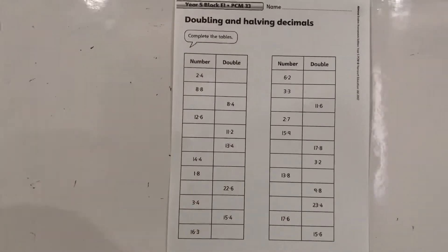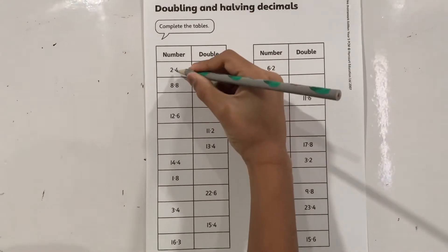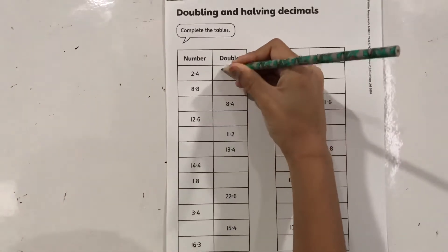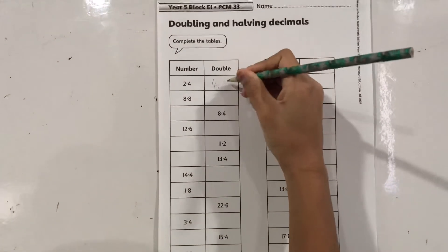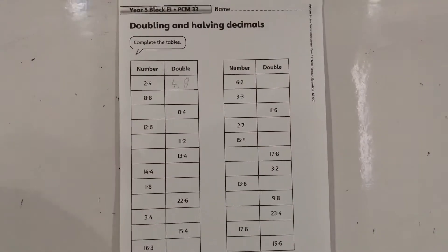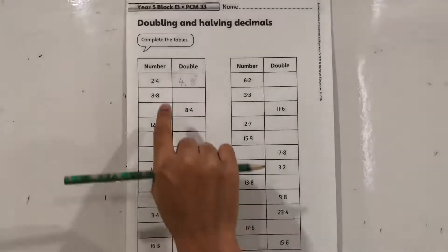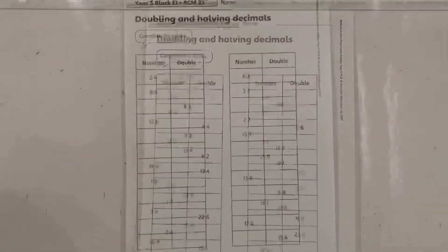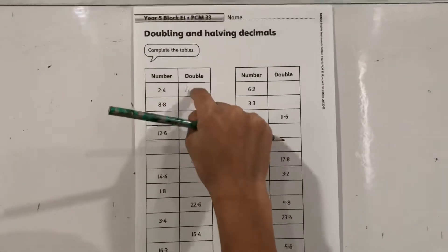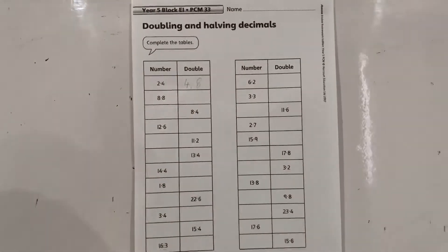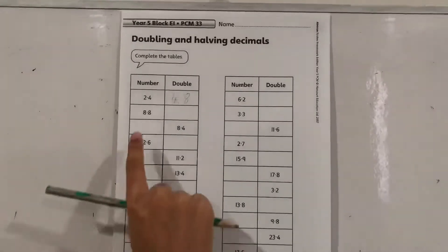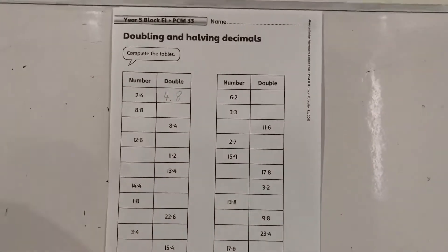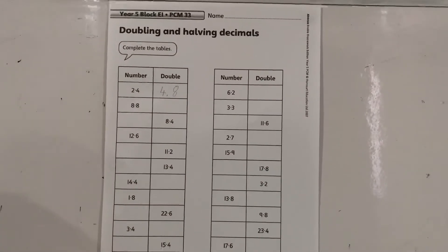We need to find the double of this number. Do you know 4.8? It is the same as doubling whole numbers, which means we double 24, but this is just a decimal. Then we put a decimal point here. Let's solve the next one: 8.8.